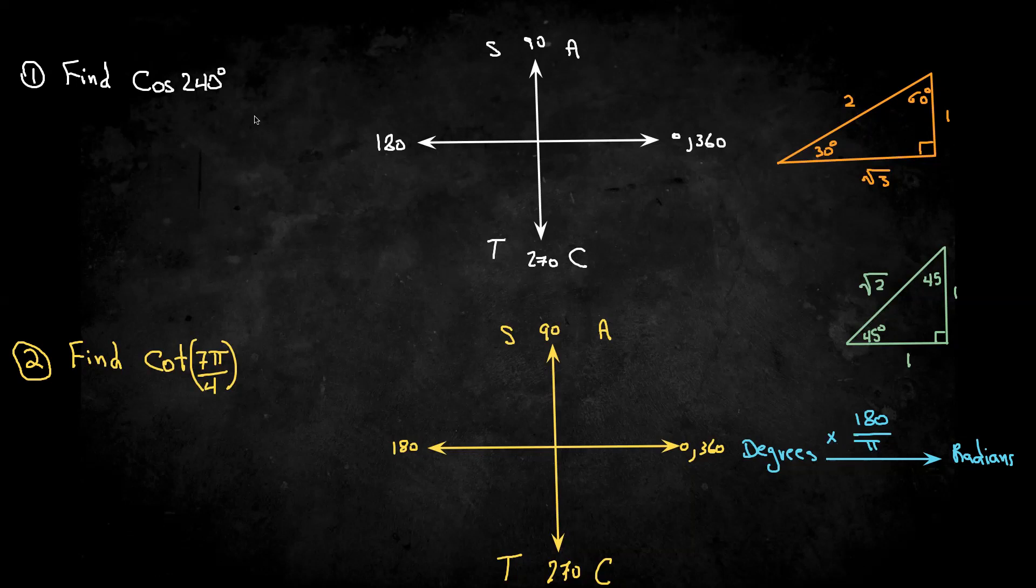Now, let's look at the first one, and the easiest way to do the first one first, you need to find out where this angle is. So 240 is going to be just past 180.